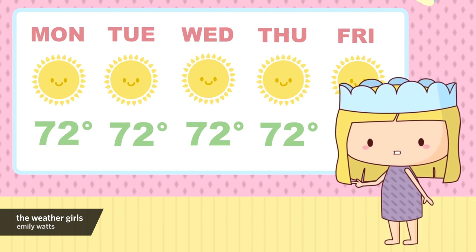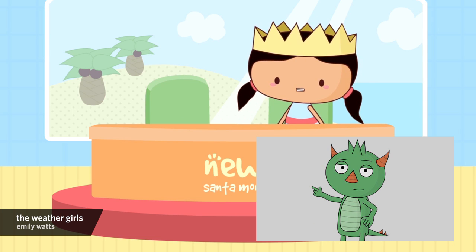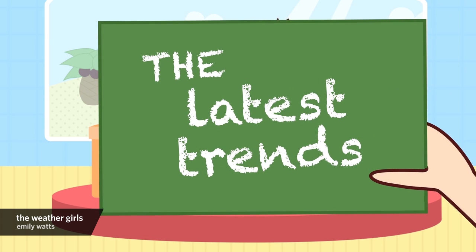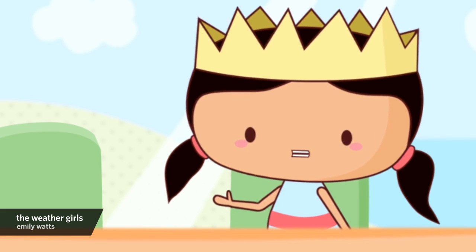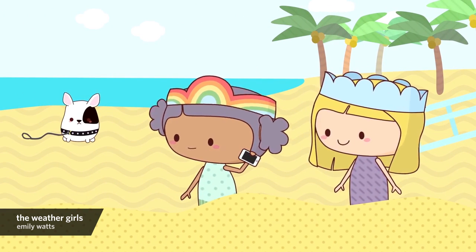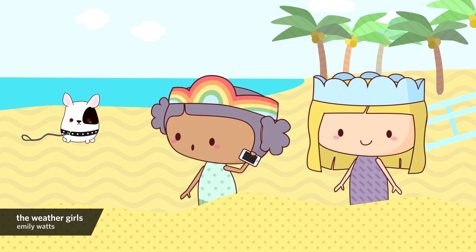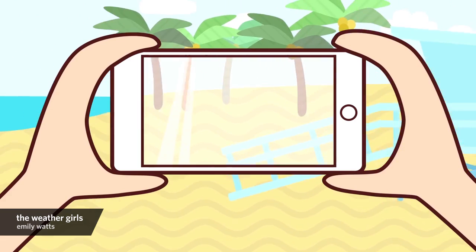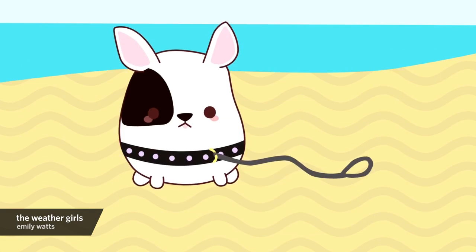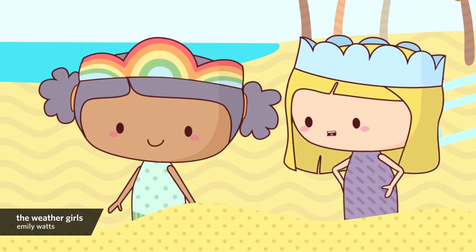Number two: start with one of the sample puppets. Even though she drew new artwork in every layer, starting with the Wilk puppet made a huge difference. Not only do you have the file structure and naming conventions in place already, but it also helps to see exactly what size, position, and style of illustration is in each layer. When her own puppets did funky things in Character Animator, she could open Wilk and compare to troubleshoot.